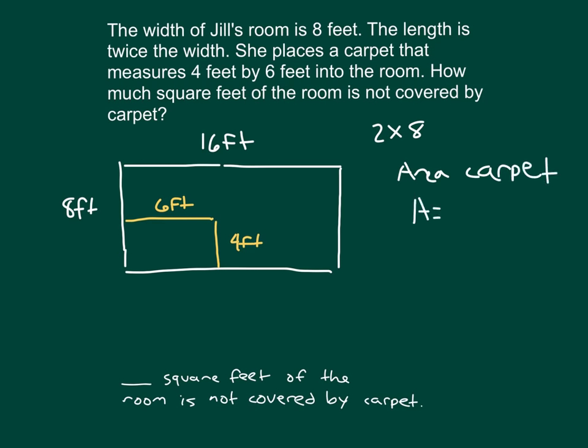The area of the room is 128 square feet. Now we're looking for the area that's not covered, so we subtract the two areas: 128 minus 24 square feet. Eight minus 4 is 4, 2 minus 2 is 0, and we have 1, giving us 104. So there is 104 square feet of the room that is not covered by carpet.